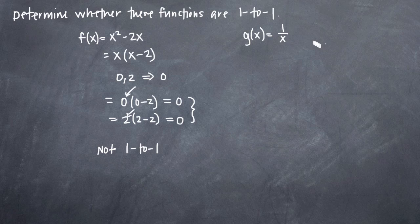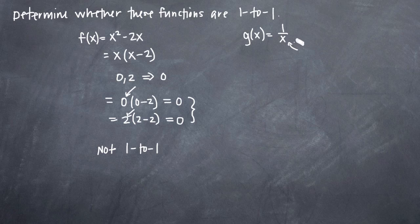If we look at our second function g(x), it's really easy to see that no matter what value we plug in for x, we'll always get a unique answer back for y. Because if we plug in -1, 0, 1, 2, 3, 4 — any value for x — this function will return a different value for y. So we know right away that this function is one to one.